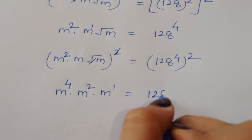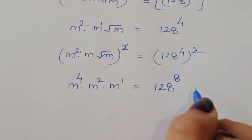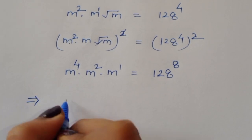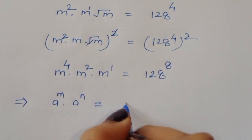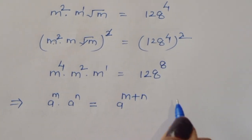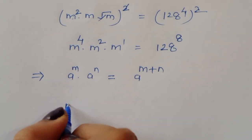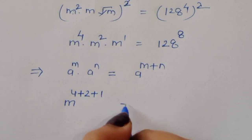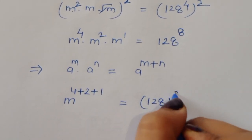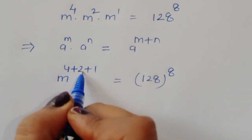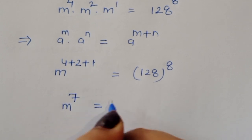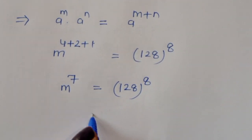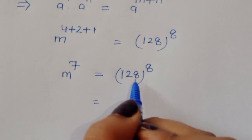This gives m to the power 1, so the result is equal to 128 to the power 8. Now using the exponent addition formula, m to the power 4 plus 2 plus 1 is equal to 128 to the power 8. So m to the power 7 is equal to 128 to the power 8.